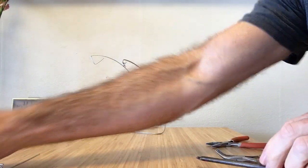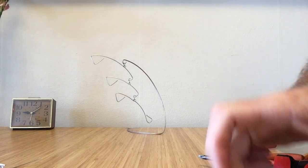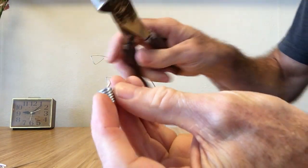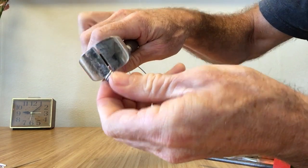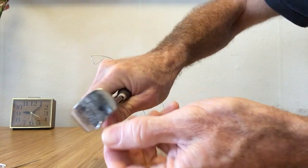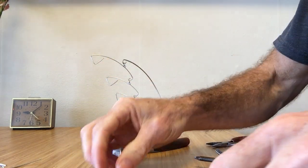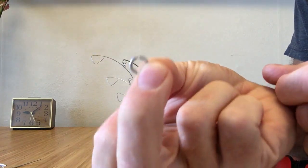So once you have that in place, what you're going to do is take your snippers and just one by one cut each of the little coils off. So what you'll end up with is a coil that looks like this, which is awesome.